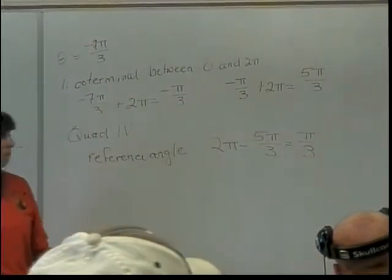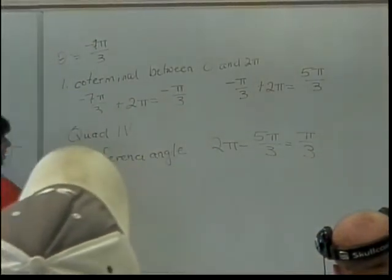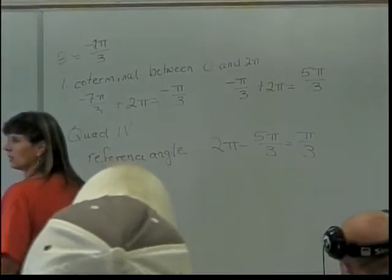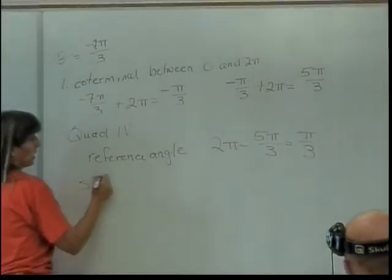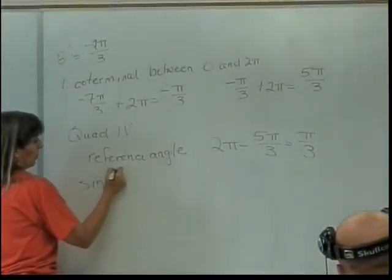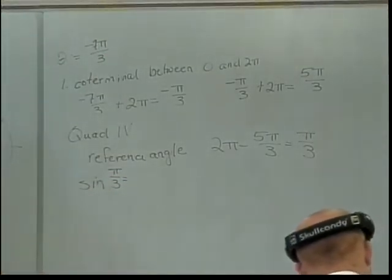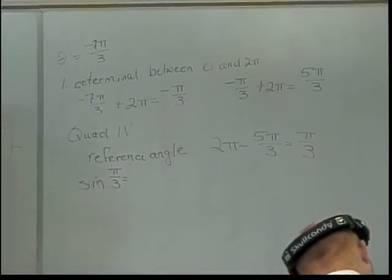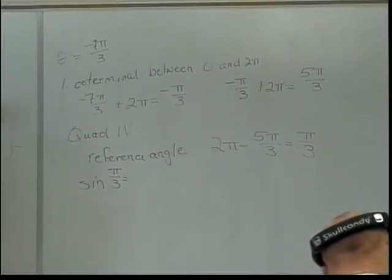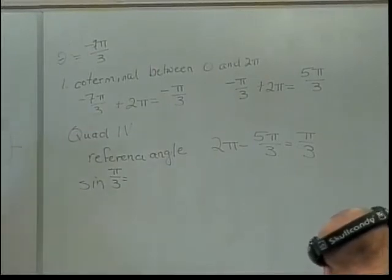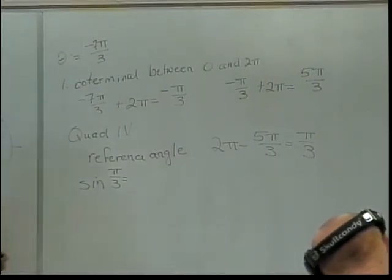So now I need to do everything in terms of pi over 3. I just need to find the sine, cosine, tangent, and secant. So what's the sine of pi over 3? Square root of 3 over 2.